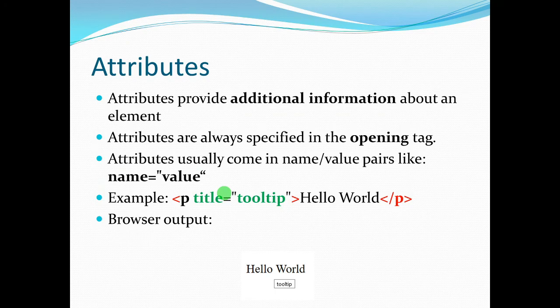The last aspect of the structure of HTML is attributes. Attributes simply provide additional information about an element, and they are specified within the opening tag. They come in name-value pairs — in other words, there is a name, an equal sign, and another word that represents the value.